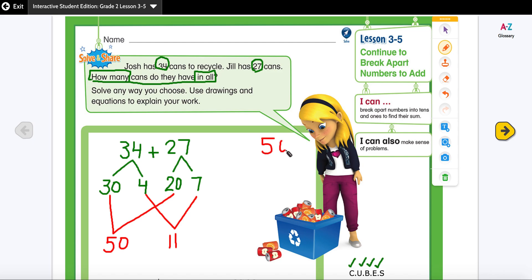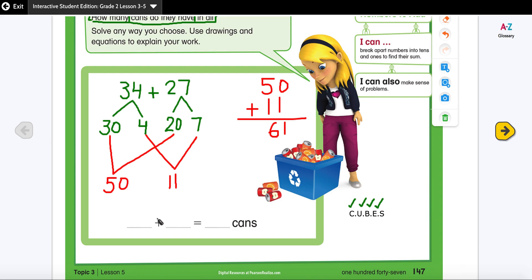I'm going to add them together. 0 plus 1 plus 1 is 1, 5 plus 1 is 6. So that shows that I have 34 plus 27 equals 61 cans.